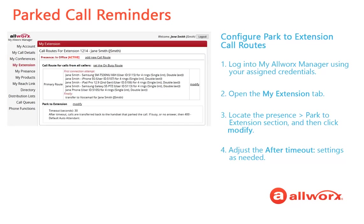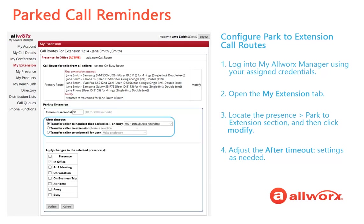Finally, AllWorks users with permissions can update the Park to Extension call route by logging in to My AllWorks Manager and opening the My Extensions tab. Locate the Presence section and then click the Modify link next to the Park to Extension heading. Adjust the After Timeout setting as necessary.